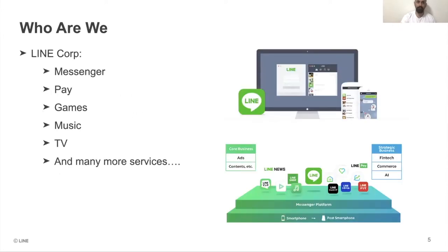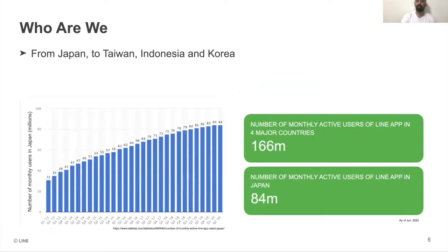Line Corporation encompasses several services including Line Messaging, Line Pay, games, Line Music, Line TV, Line Manga, and several others — across different domains such as fintech, commerce, and artificial intelligence. We also have ad and content-based businesses. Line Corporation operates in different parts of Southeast Asia and South Asian countries including Japan, Taiwan, Indonesia, and Korea, with roughly 166 million monthly average users, almost 84 million here in Japan.